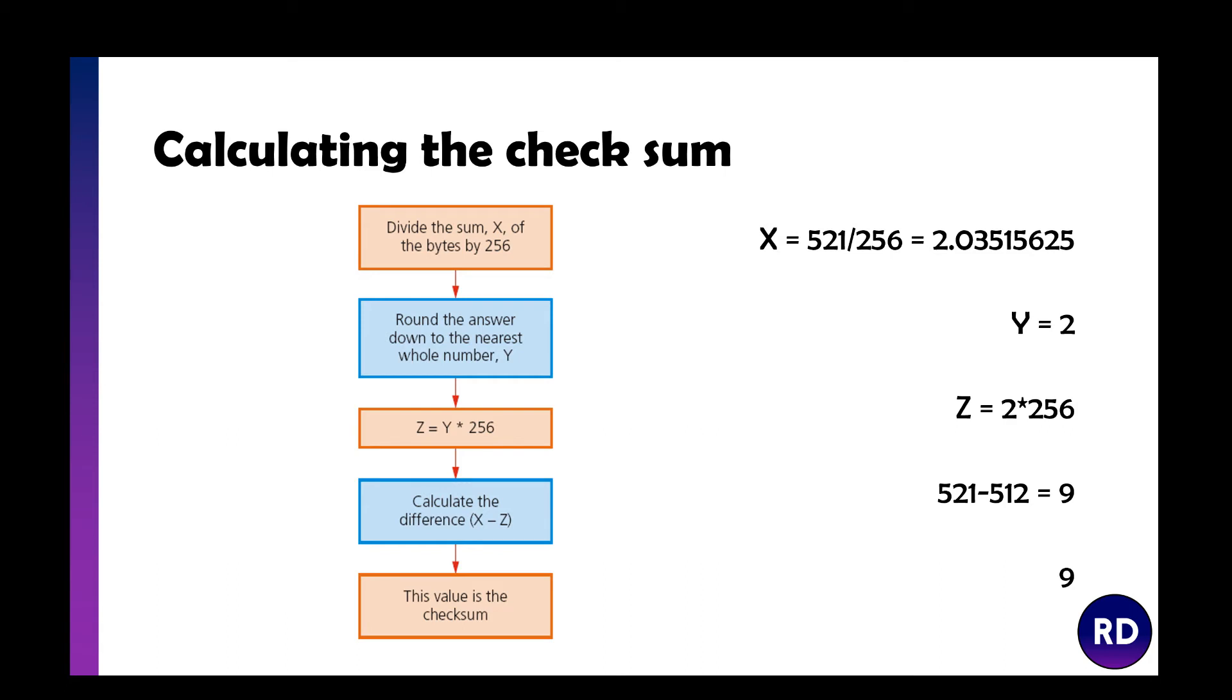Then you multiply it by 256, so Z equals 2 times 256, which is 512. Then you calculate the difference: 521 minus 512 equals 9, and 9 is the checksum.